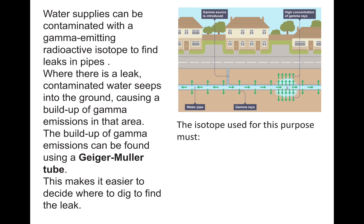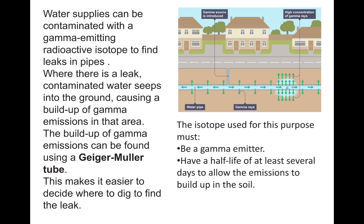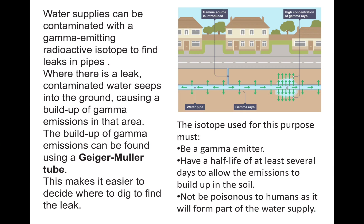The isotope used for pipe leak detection must be a gamma emitter, as alpha or beta radiation would not be able to travel through the ground. It must have a half-life of at least several days to allow emissions to build up within the soil. It also cannot be poisonous to humans, as it will form part of the water supply. It should not have a very long half-life either, because it would remain radioactive for a long period of time, causing massive health implications.